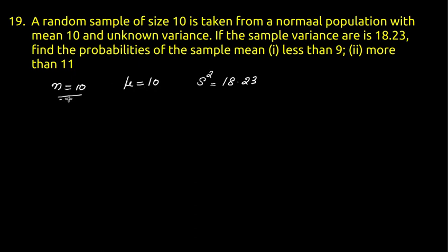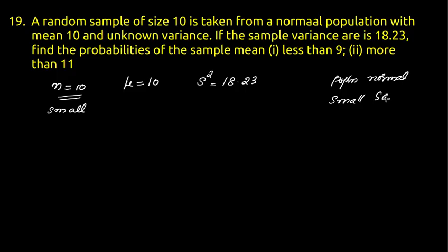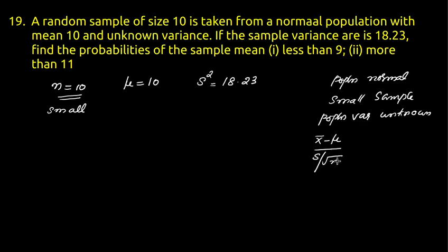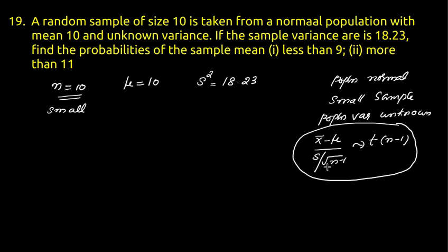Since the sample size n is 10 (small sample), the population is normal, and the population variance is unknown, we use the t-distribution with n minus 1 degrees of freedom. The statistic X-bar minus mu divided by s divided by the square root of n minus 1 follows a Student's t-distribution with n minus 1 degrees of freedom.